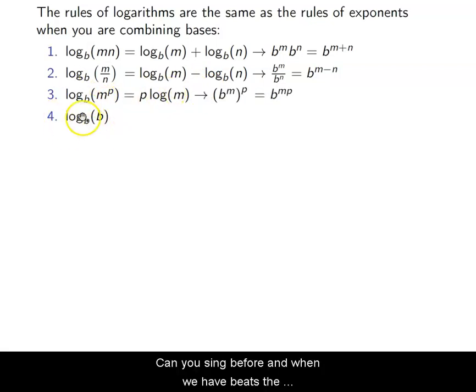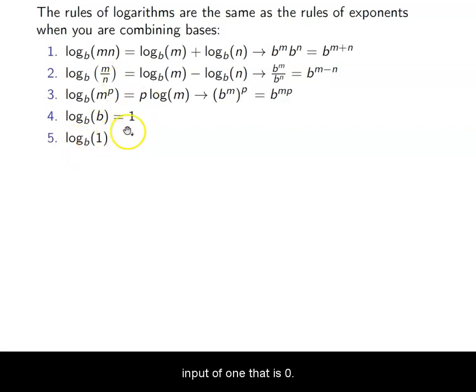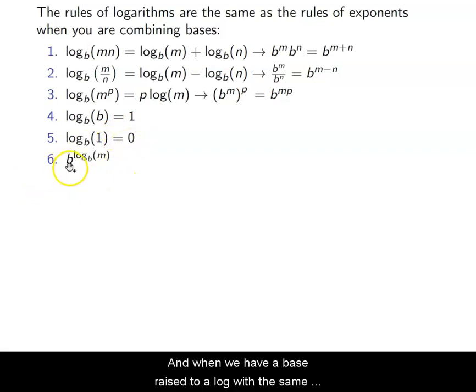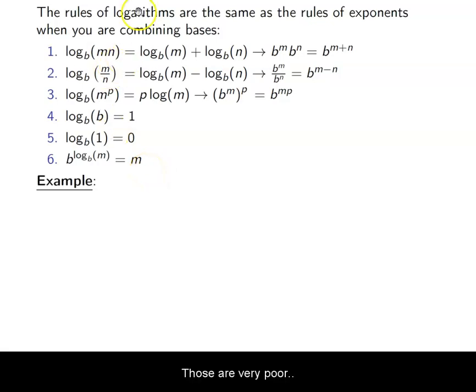And we've seen before when we have log base b with b on the inside, that this is just one. So this is sort of a review for these ones. Log base b with an input of one, we know that that is zero. And when we have a base raised to a log with the same base, those two cancel out, and you get just m. So those are very important.